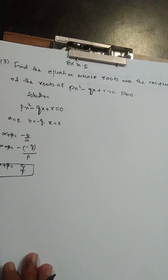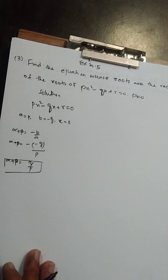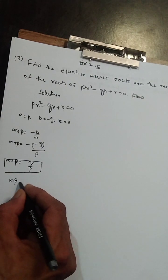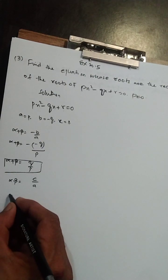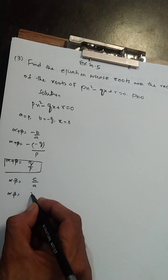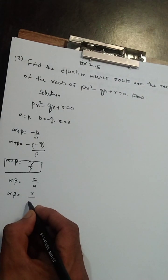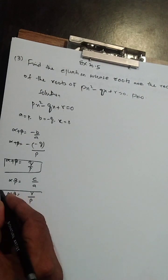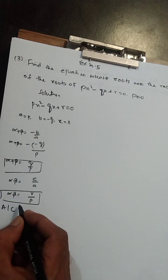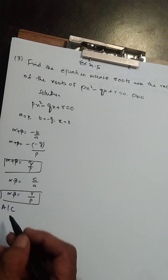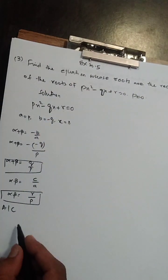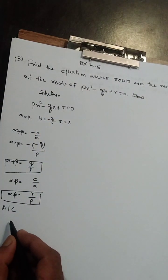Iske baad hume product of roots chahiye. Product of roots ka formula hai alpha into beta = c upon a. C ki jagah c ki value r rakhenge aur a ki jagah p rakhenge, to alpha × beta = r upon p.